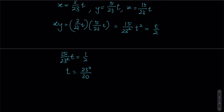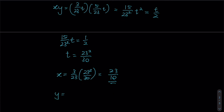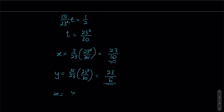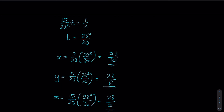Now that we have a numerical value for t, we substitute to find x, y, and z individually. For x: 3 over 23 times (23 squared over 30) — the 23 cancels — giving x equals 23 over 10. For y: 5 over 23 times (23 squared over 30) gives y equals 23 over 6. For z: 15 over 23 times (23 squared over 30) gives z equals 23 over 2.